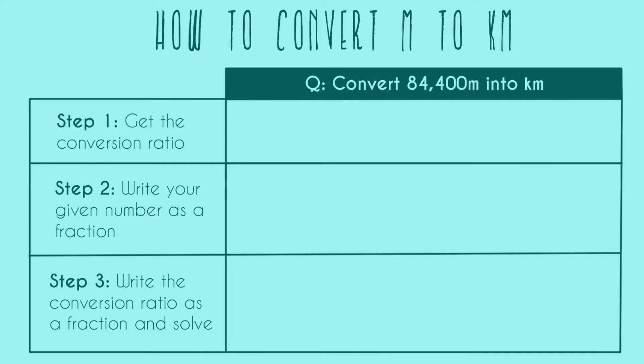Step one is to get the conversion ratio. For all these conversion problems, we're going to have two units, and you just have to know from either memorizing or looking it up, how many units of one equal how many units of the other one. So for this problem, a thousand meters equals one kilometer.